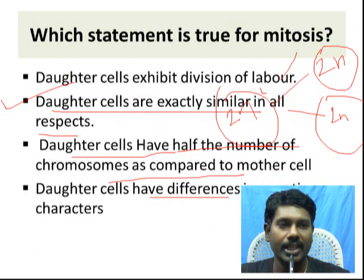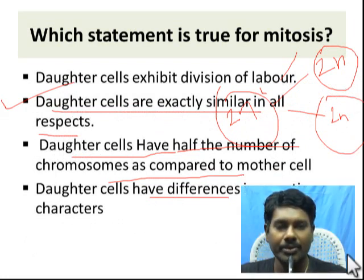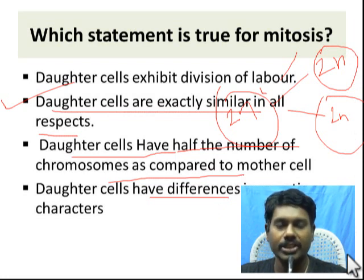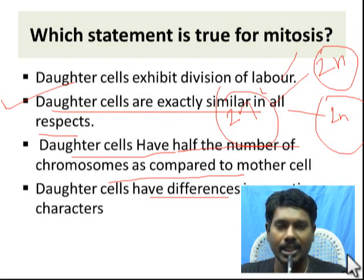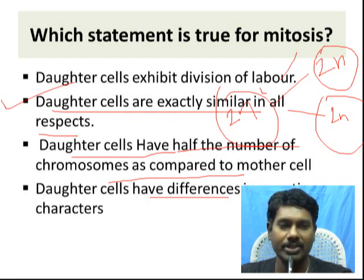There are no differences in genetic character in mitosis — 2N remains the same. Mitosis occurs in somatic cell divisions, while meiosis occurs in gonadal or reproductive cells, resulting in a haploid (N) condition — that is, half the number of chromosomes in the daughter cells.